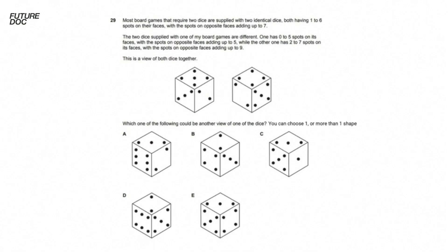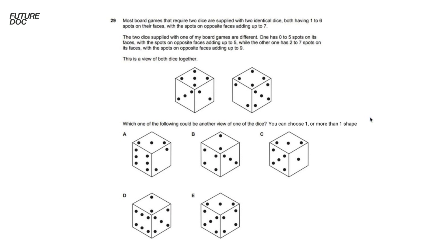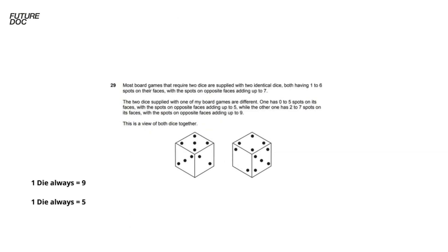The first stage is that we have to work out which die is which. We know that one of them - opposite sides will always add up to nine, and the other - opposite sides will always add up to five. The first thing I noticed is that you've got a five and a four here, which add up to nine, so these must be on opposite sides. So this can't be the nine die - this has to be the five die.